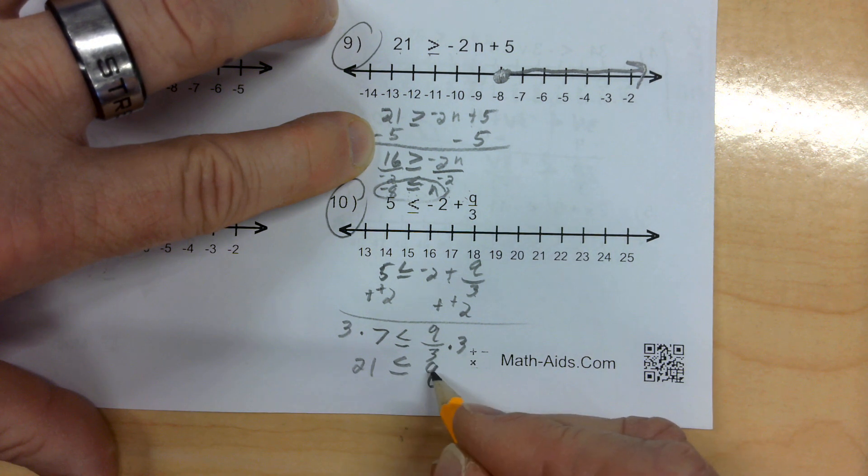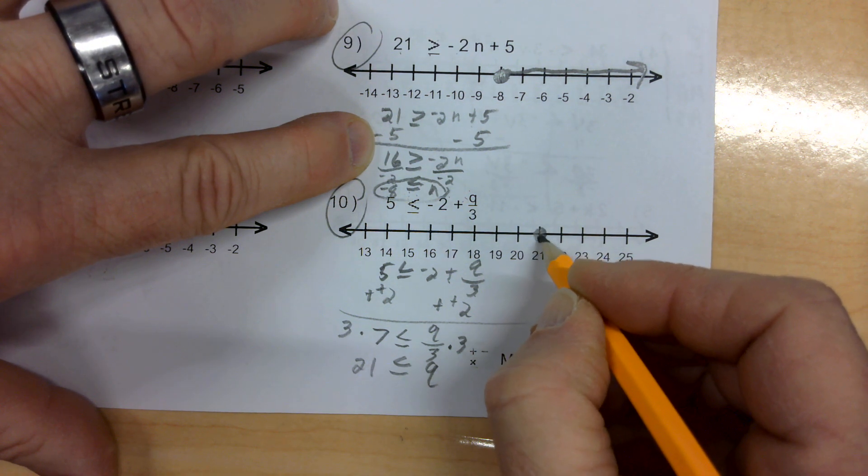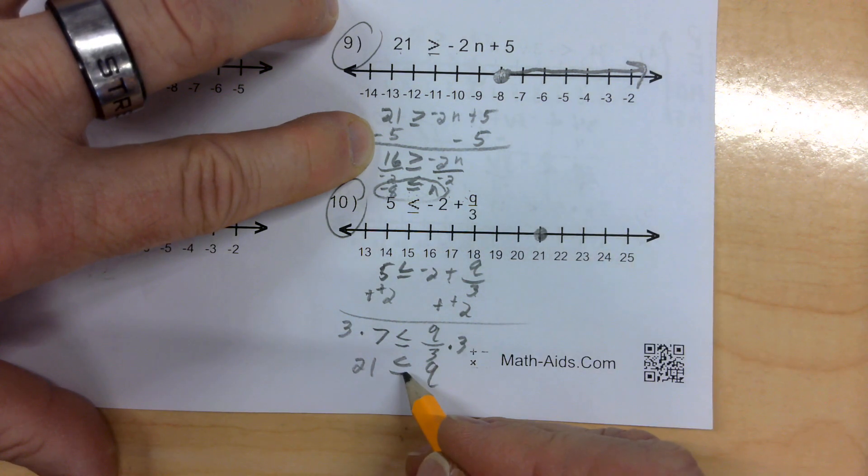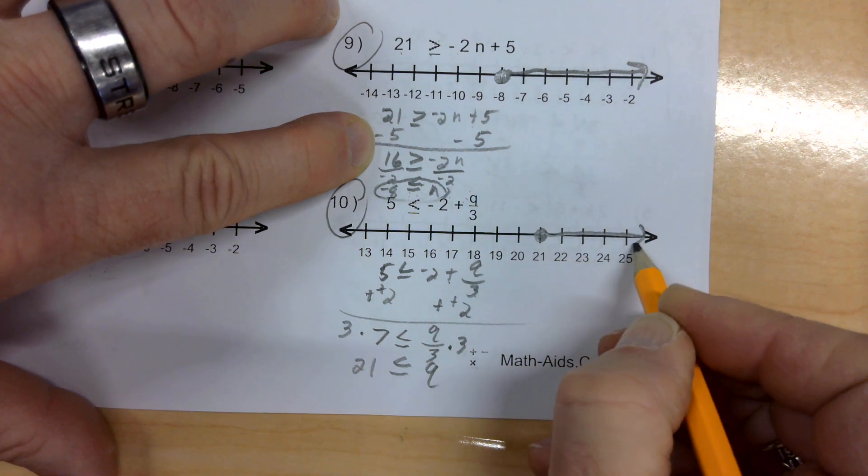21 is less than or equal to Q, which means Q is greater than or equal to 21. Go to 21. Greater than or equal to is a solid dot. And then, because it's more lead, it's a solid dot. And greater than or equal to goes to the right.